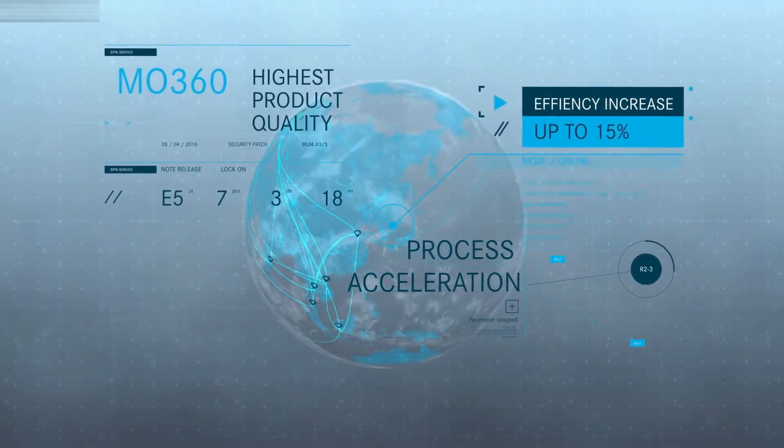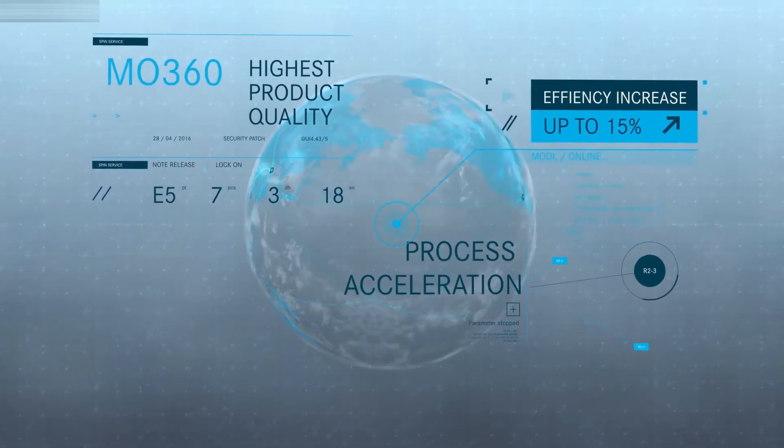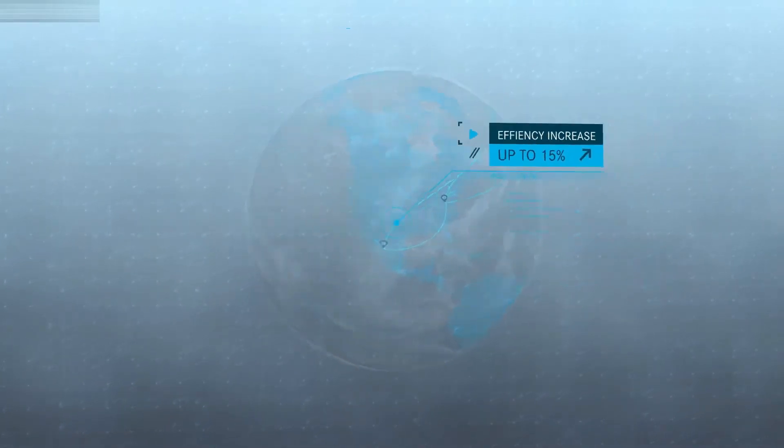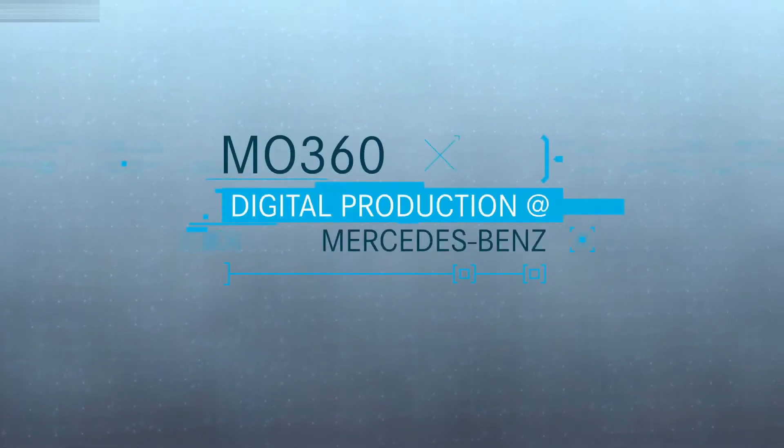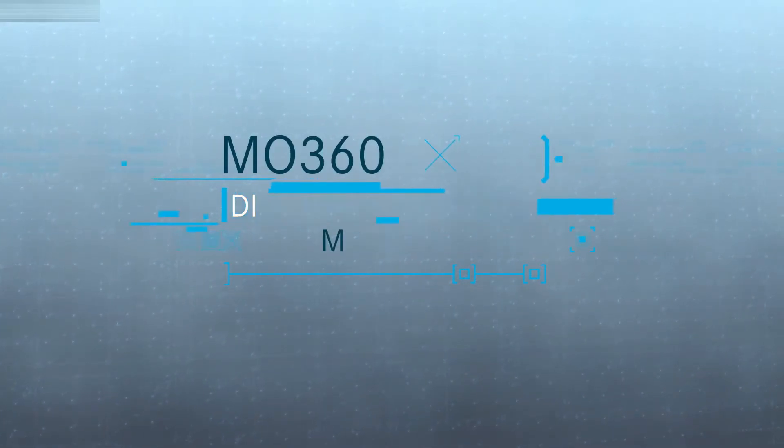And by 2022, efficiency will increase by up to 15%. MO360, the new digital ecosystem for vehicle production by Mercedes-Benz.